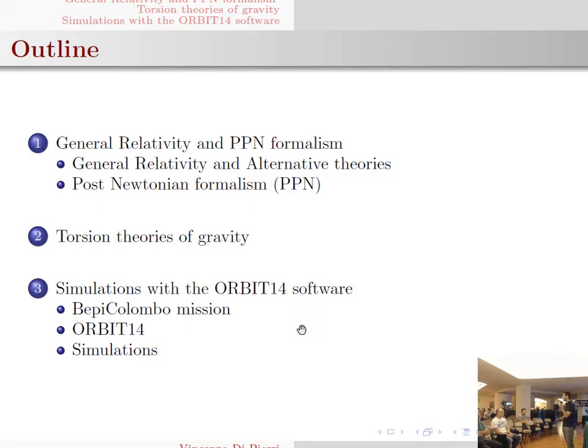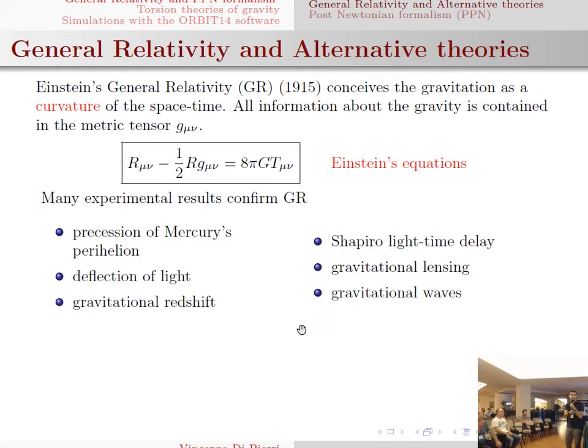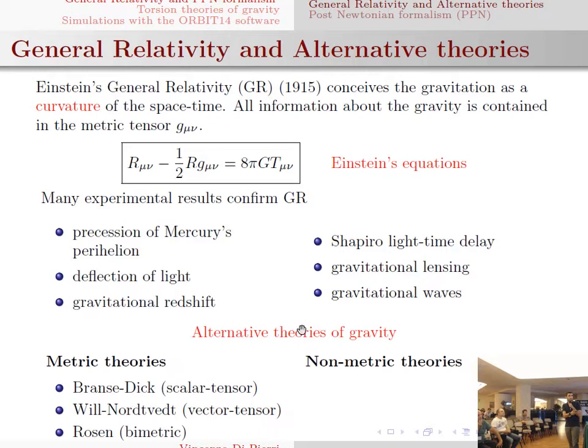I start by introducing the most famous theory of gravity — Einstein's general relativity — that is a metric theory of gravity. That means that mass causes curvature of space-time, and everything is governed by the metric tensor. Even if general relativity has been confirmed by many experimental results, including the last detection of gravitational waves, over the years many alternative theories of gravity were proposed.